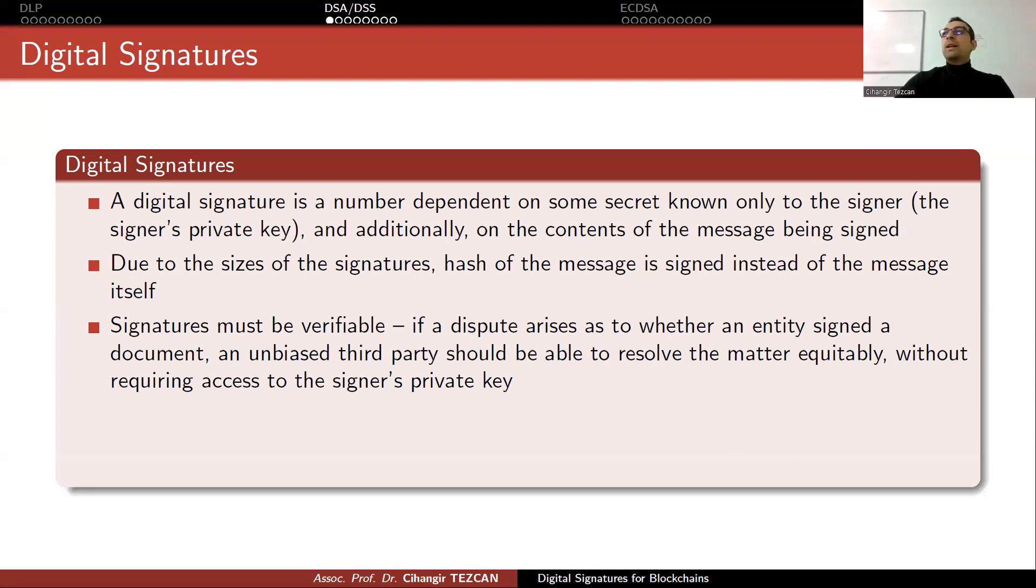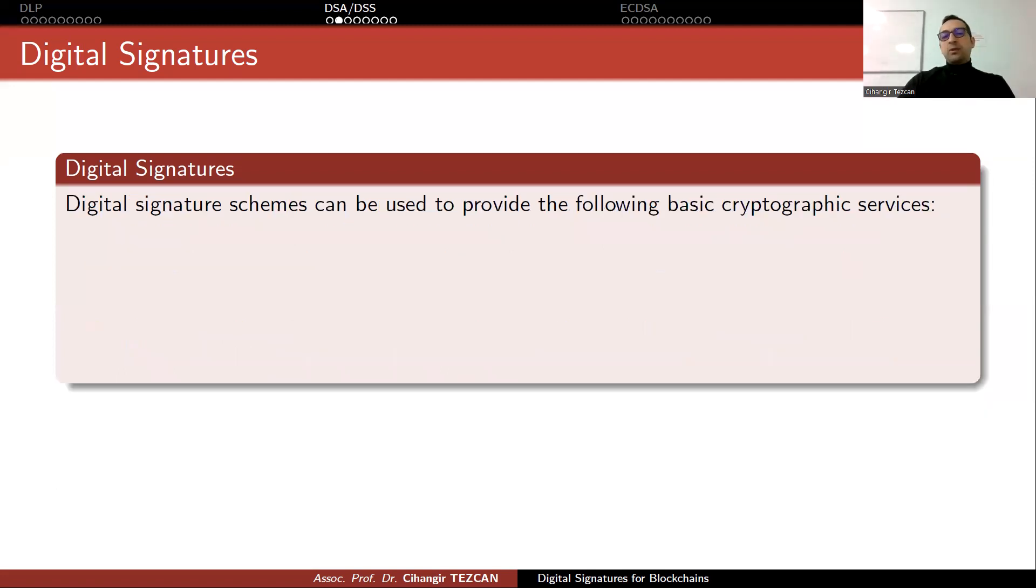This is what happens in a Bitcoin transaction, for instance. You sign your transaction and every other node can verify that you really signed it. So there's no dispute if the digital signature algorithm is correct. Disputes may arise when a signer tries to repudiate a signature it did create, or when a forger makes a fraudulent claim. So you try to forge a signature which is not signed by the person who can sign it.